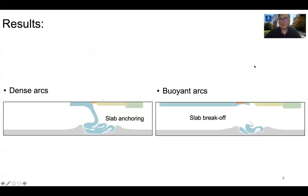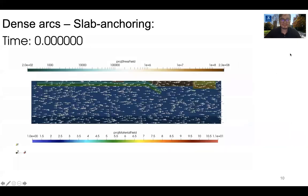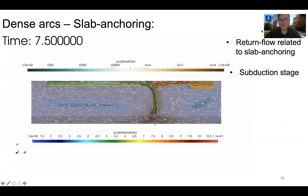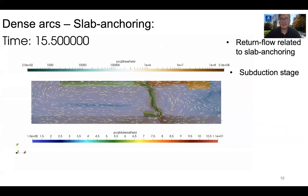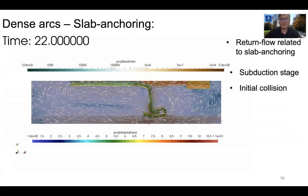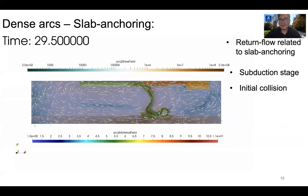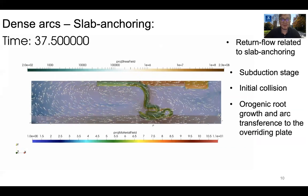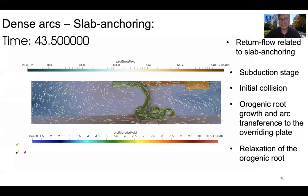Results from this 2D numerical purely mechanical modeling show that arc-continent collision can be followed by two dynamic mechanisms: arc transference plus slab anchoring in dense arcs, and slab break-off in buoyant arcs. In the evolution of dense arcs, the onset of slab anchoring results in a return flow. An initial collision is followed by the growth of an orogenic root, which following arc transference results in the relaxation of this orogenic root and the release of a gravitational flow directed from the arc towards the surrounding subducting and continental plate lithosphere.